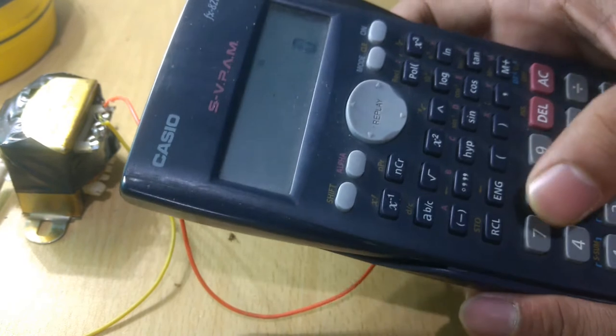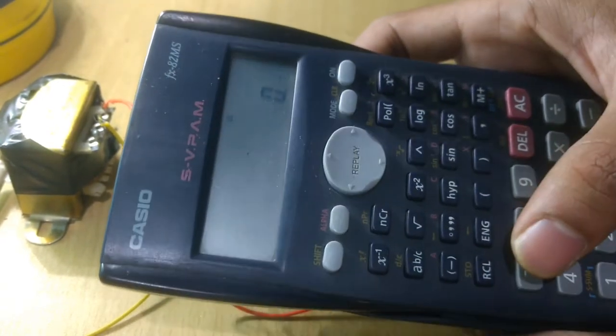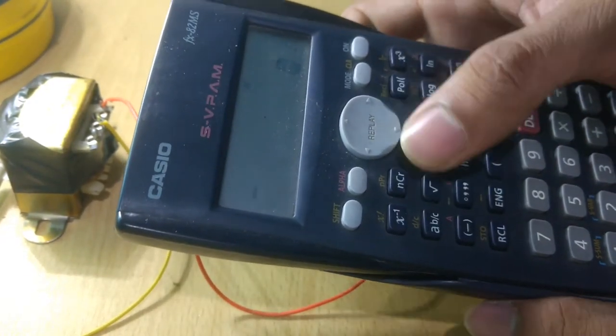If we give an AC input of RMS value 7 volts, then the peak value will be root 2 times that.